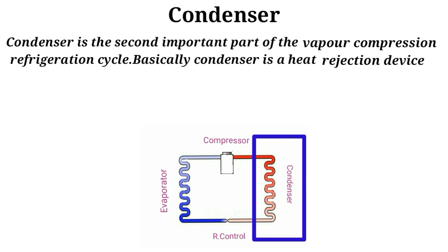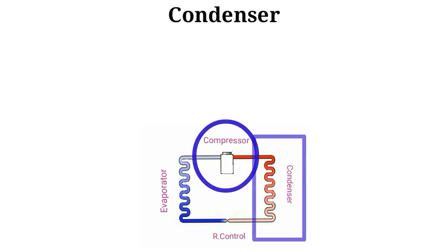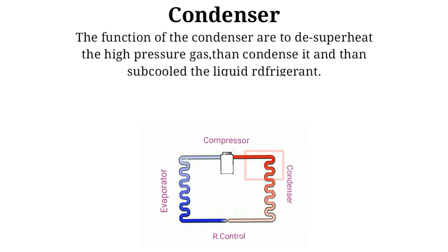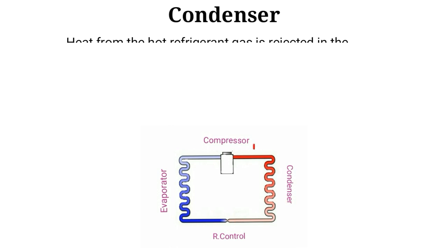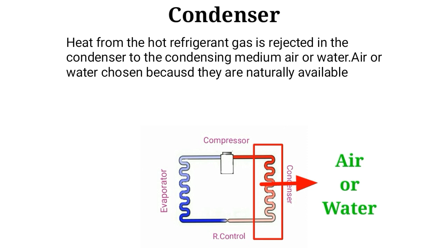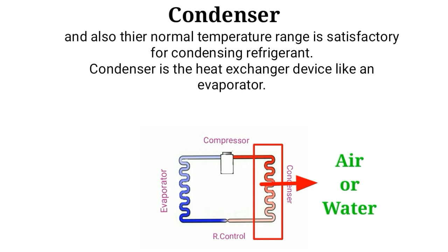The condenser is a heat rejection device which is installed after the compressor in the vapor refrigeration cycle. The functions of the condenser are to desuperheat the high pressure gas, then condense it and then subcool the liquid refrigerant. Heat from the hot refrigerant gas is rejected in the condenser to the condensing medium — air or water — which are naturally available and have a satisfactory normal temperature range for condensing refrigerants.